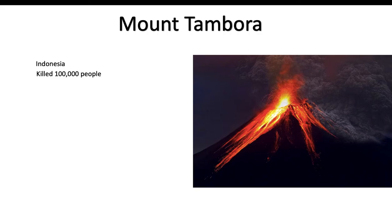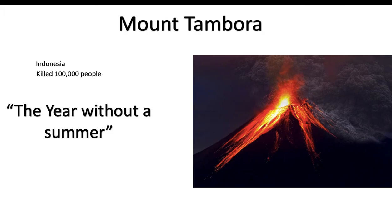The ash even reached the sky over New England — the northeastern part of the USA, places like New York. It reached all the way there — can you imagine the ash reaching that far? There was no summer there either, because light couldn't reach that part. So much ash came out of Mount Tambora that the event was called the year without a summer.